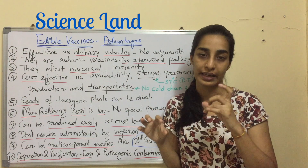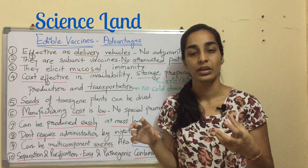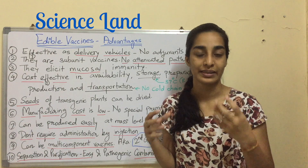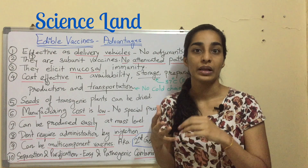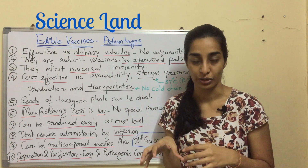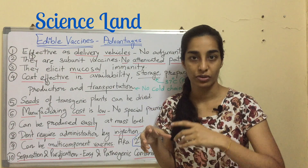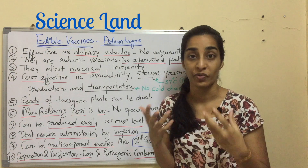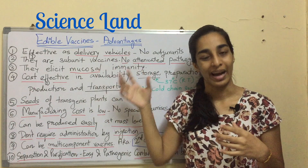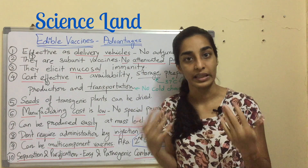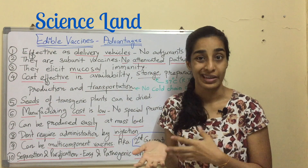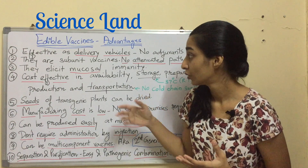Second, they are subunit vaccines with no attenuated pathogens. Edible vaccines use an antigen gene that produces a protein, but this protein will never revert back to its infectious form, meaning it will never cause disease. With attenuated pathogens, there are chances the weakened pathogen might revert back to its infectious form. So edible vaccines improve the safety of individuals. Third, they elicit mucosal immunity, which traditional vaccines don't.